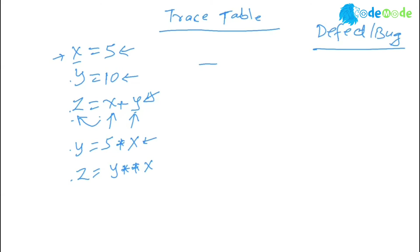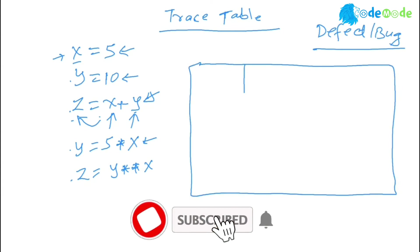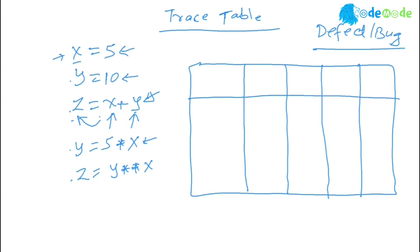So trace table is a simple table in which you create a table in a certain structure. Create a table with some columns. The first column is your code itself, or you can say a line number. Let's say this is a line number.